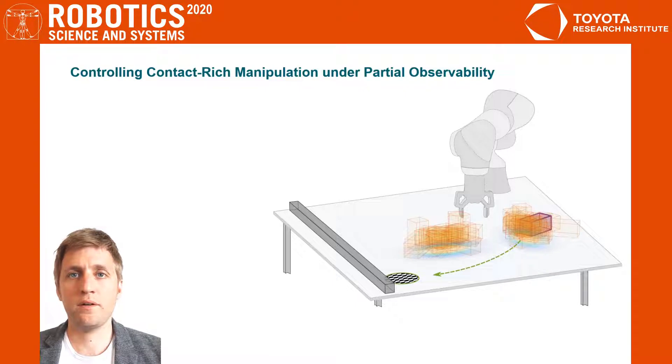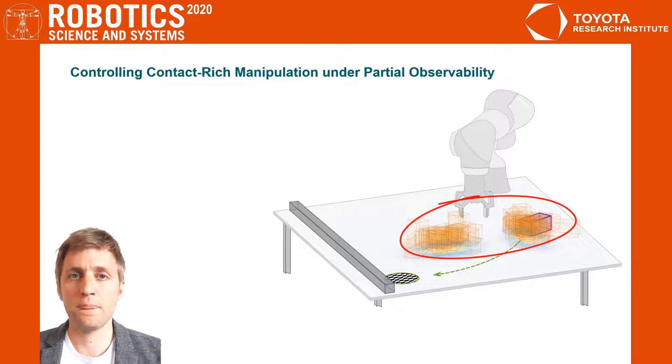The robot has no more access to precise estimates of the object location but must make its decision based on the current belief, given coarse initial priors and noisy joint encoder readings as feedback. Rash actions can now lead to unrecoverable situations such as the block being pushed off the table.